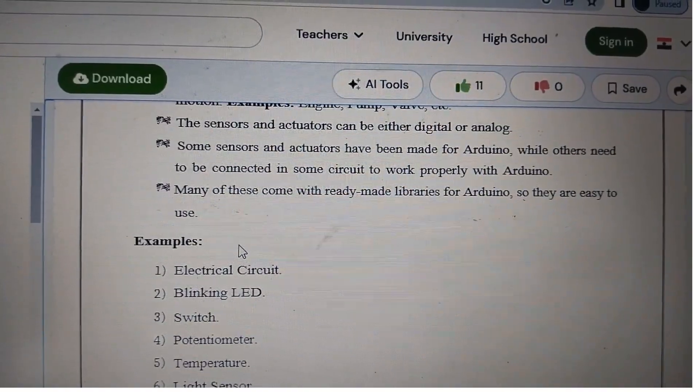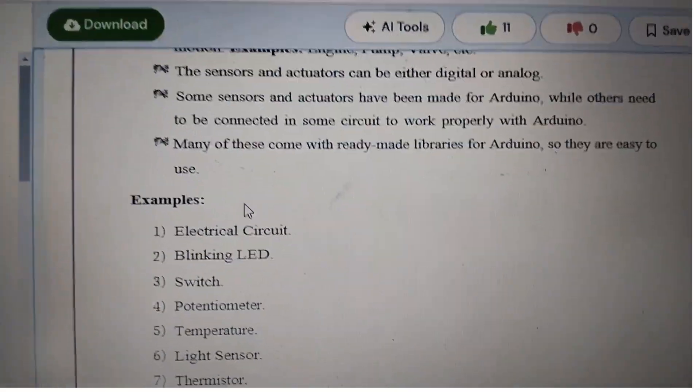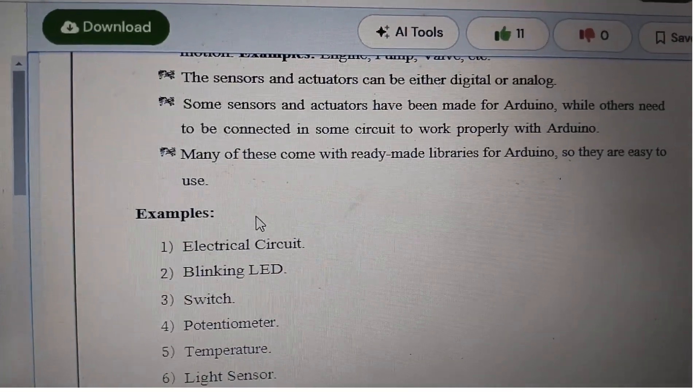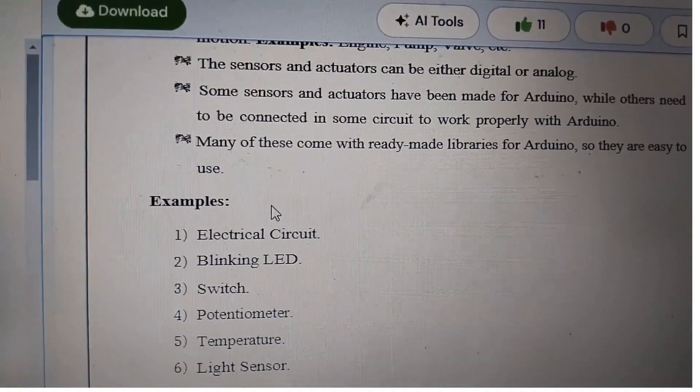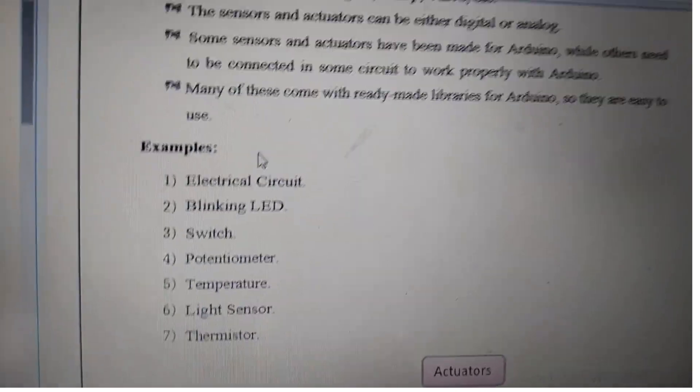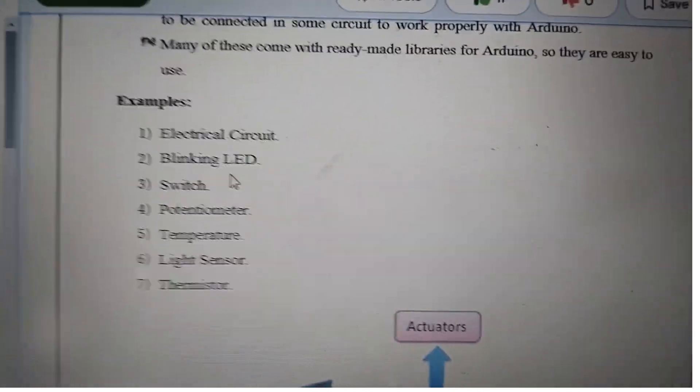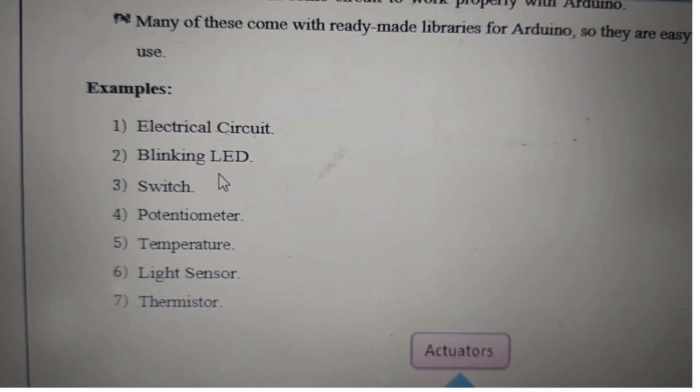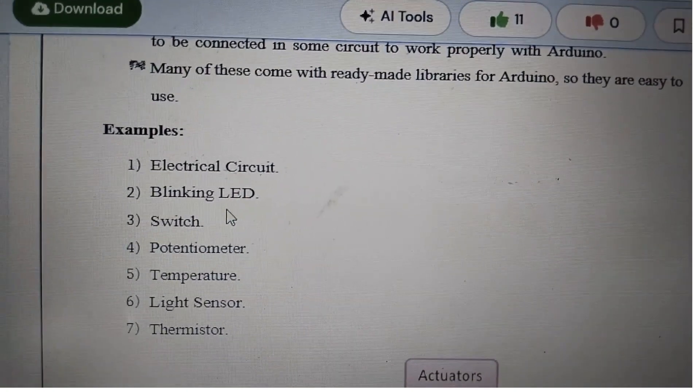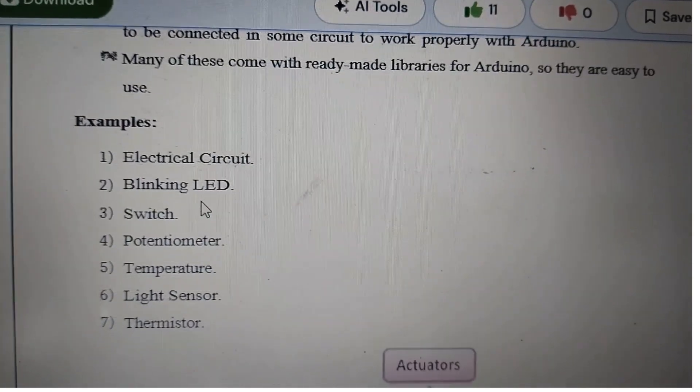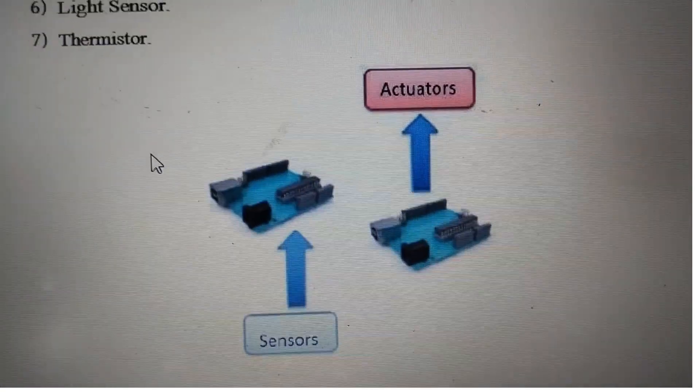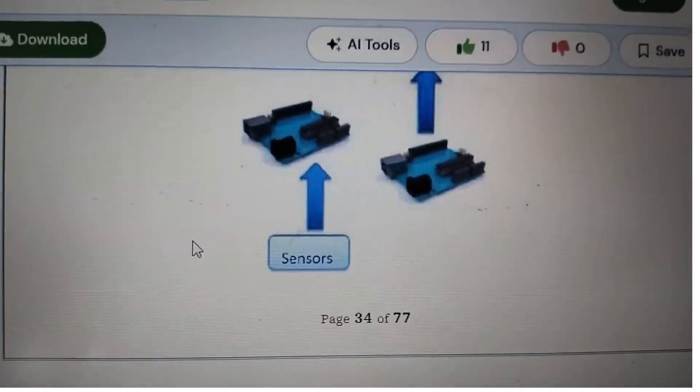Many of these come with ready-made libraries for Arduino, so they are easy to use. Examples of sensors and actuators include electrical circuits with blinking LEDs, switches, potentiometers, temperature sensors, light sensors, and thermistors.